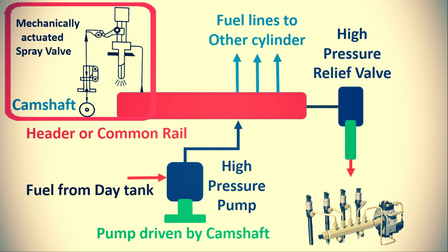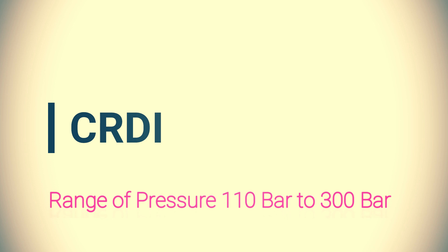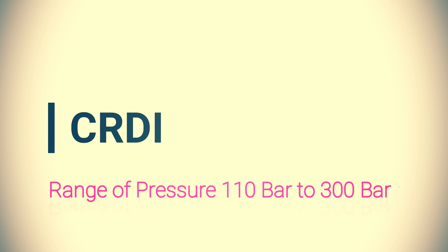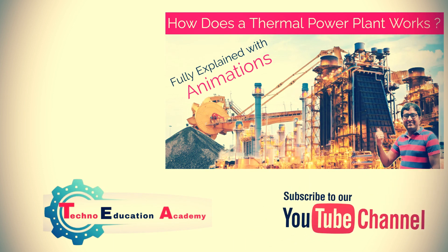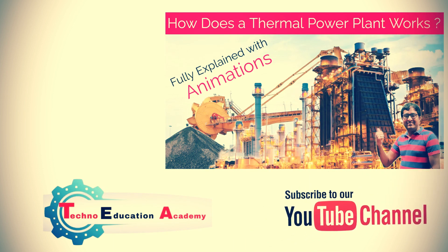Here you can see the arrangement of the fuel valve metering system and fuel nozzle as shown in the diagram. This system uses spring-loaded injection valves which open and close by mechanical means. The range of pressure in the CRDI system is between 110 bar to 300 bar, depending on the compression ratio and design of the engine.